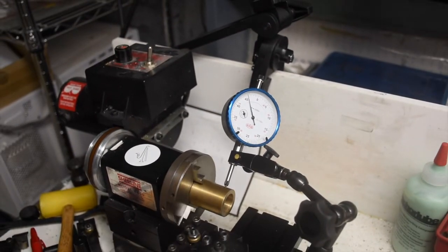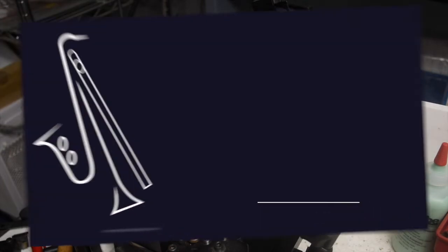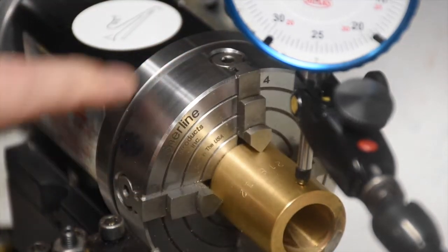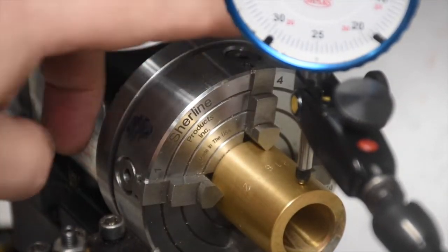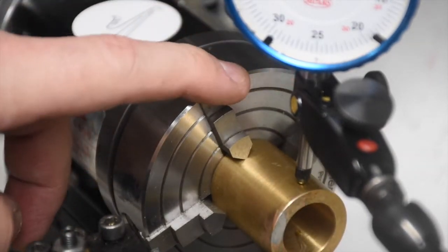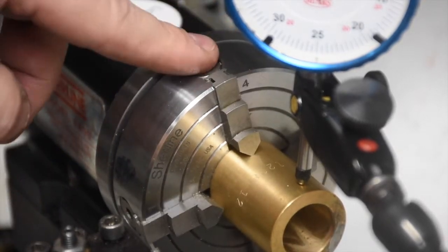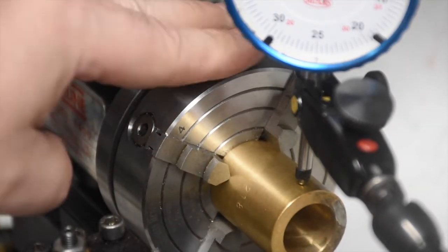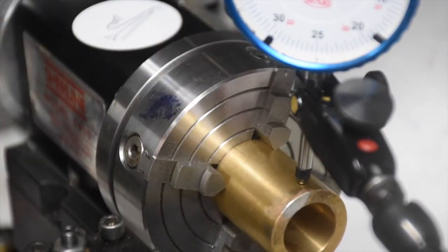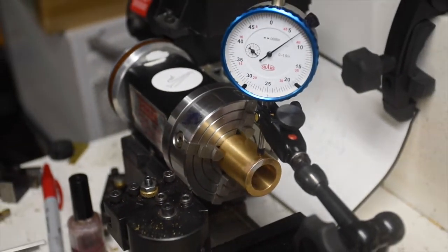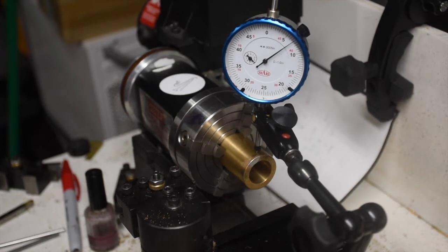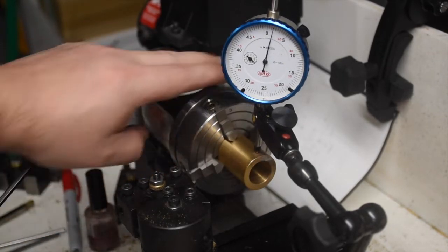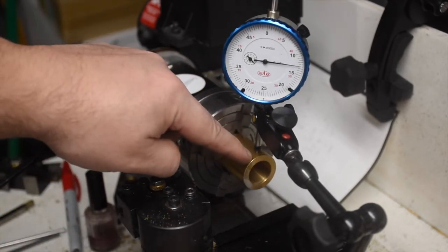That doesn't do me any good when I have to cut four thousandths. So we're going to switch over to the four jaw chuck and I'm going to show you how to use one of those. Four jaw chuck. Four independent jaws. They make three jaw chucks, four jaw chucks, six jaw chucks with independent jaws. And what this allows you to do is really dial in where the center of that is.